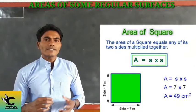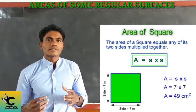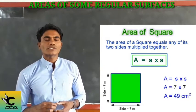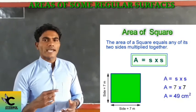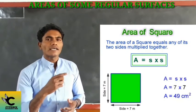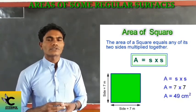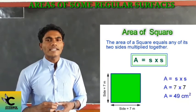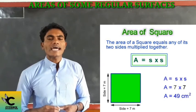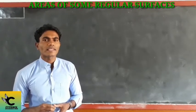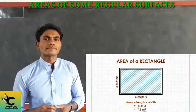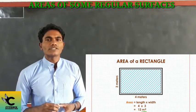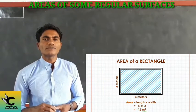Now we will see some formulas for calculating surface area. First, the area of a square: Area = side × side, which equals side squared, because a square has equal sides. Second, the area of a rectangle: Area = length × breadth, written in short form as l × b.